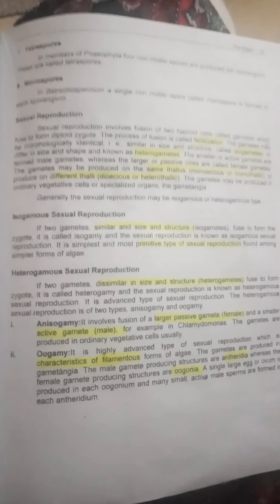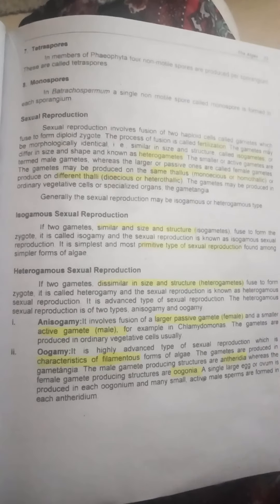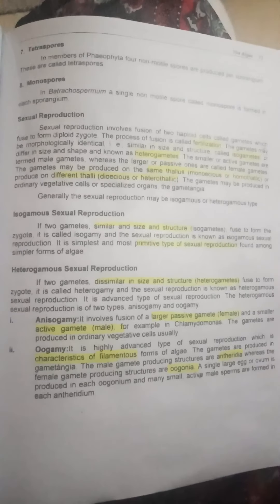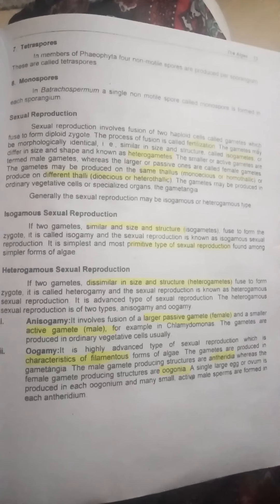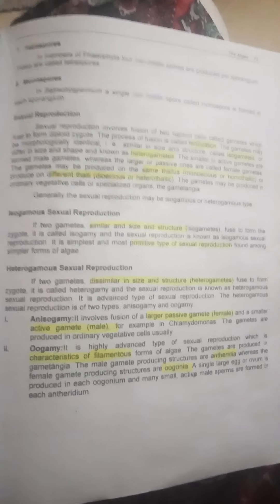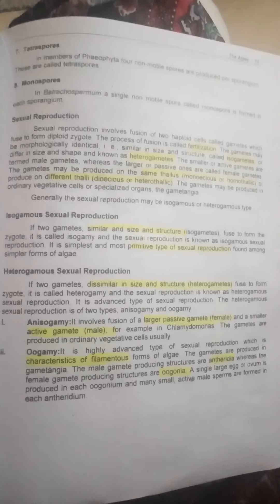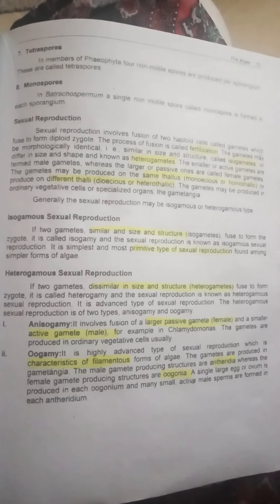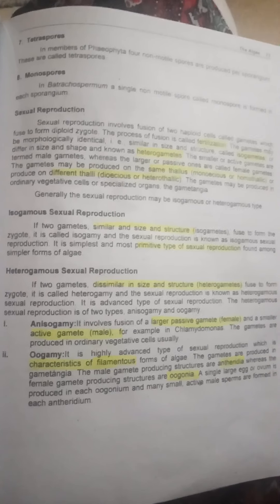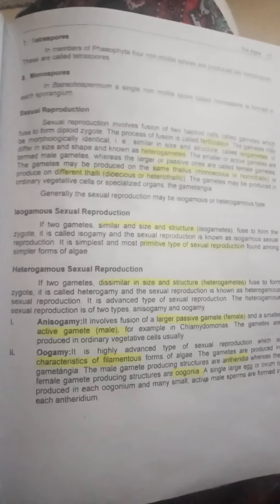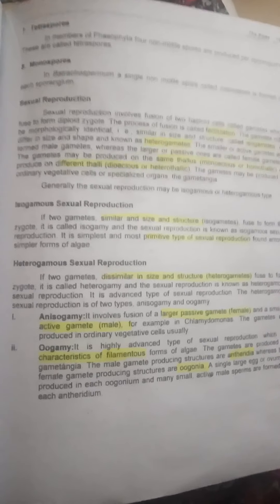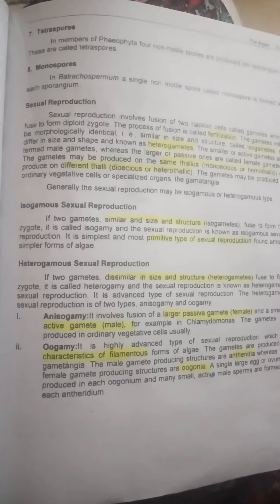Heterogametes involve gametes of different size and structure. If gametes are independent, larger gametes are female and smaller gametes are male. This is the more advanced type. Vegetative cells can act as sperm and egg — these are ordinary vegetative cells forming the body of the cell.